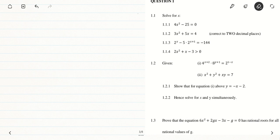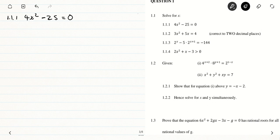So let's look at 1.1.1. On 1.1.1, we are given 4x squared minus 25 is equal to 0, and we are asked to solve for x. When you solve a question like this, you have to look at what it resembles. This expression resembles the form x squared minus a squared, where x is the variable and a is the constant, which in general equals (x minus a) multiplied by (x plus a).